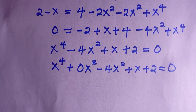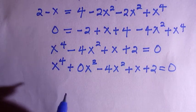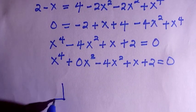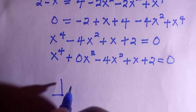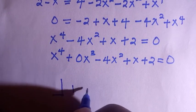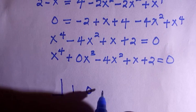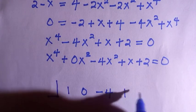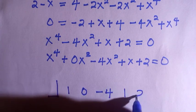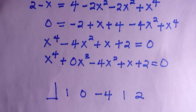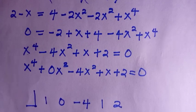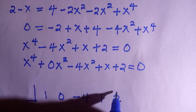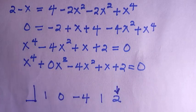To solve this without thinking too much, we're going to use a synthetic division approach to find all the roots. We draw the lines and consider the coefficient of each term: the first is 1, the second is 0, the third is negative 4, the fourth is 1, and the last is 2.